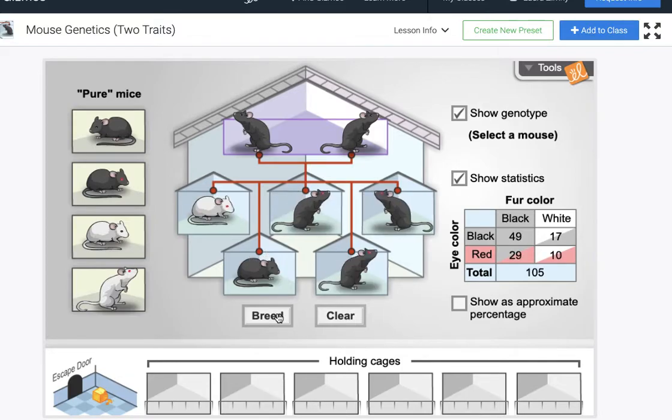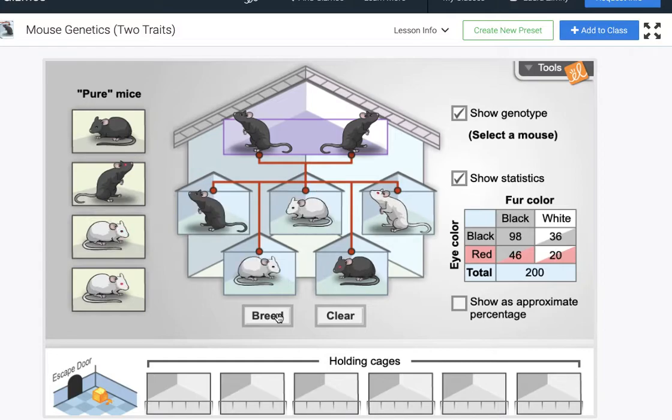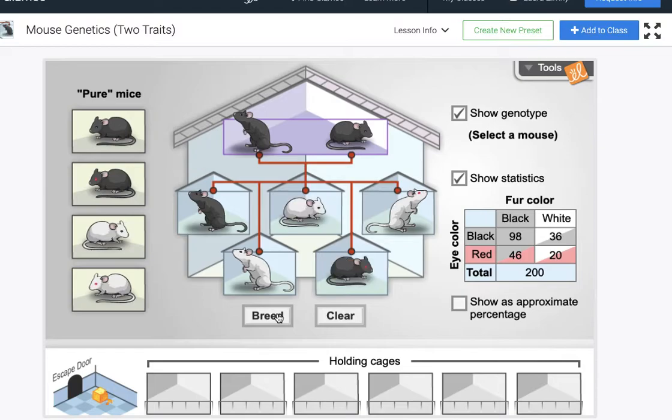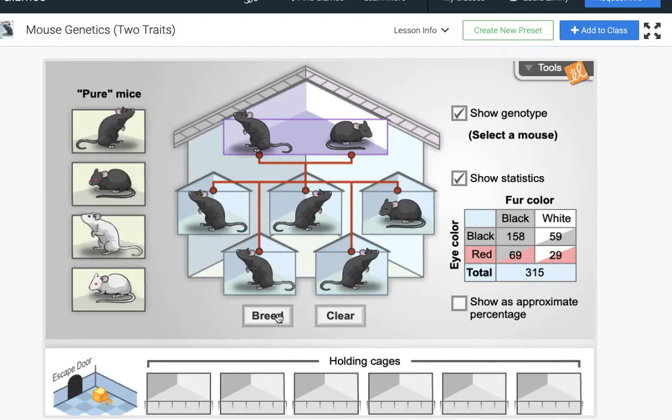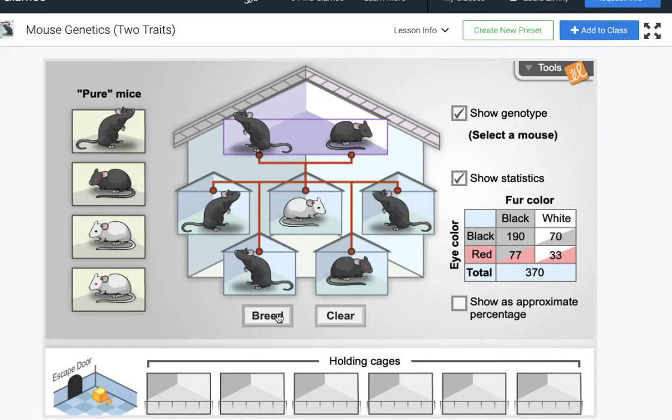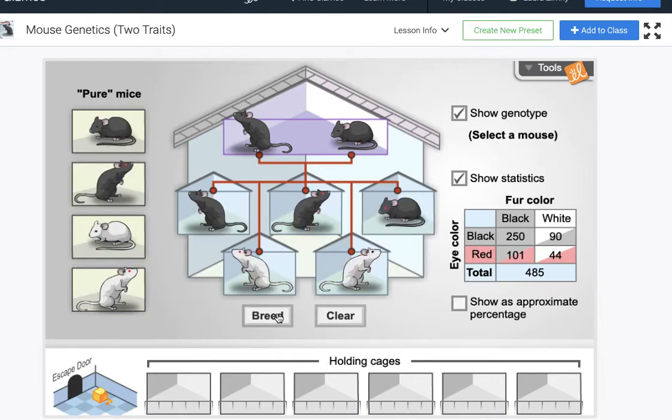One of the things I like about this simulation is it shows the importance of continuing to collect data, that if all we did was collect data once our results might not actually reflect our probable results in reality. So for this one I'm actually gonna breed these mice like 500 times.